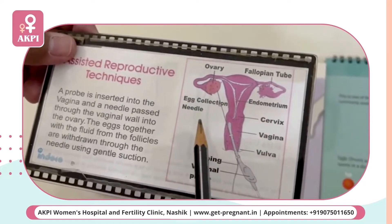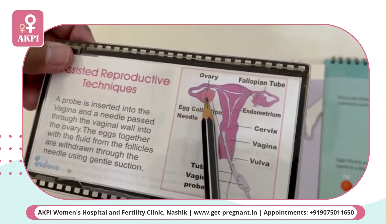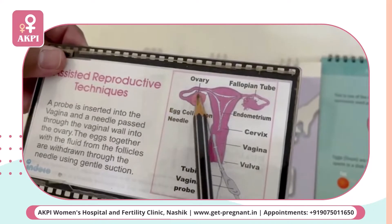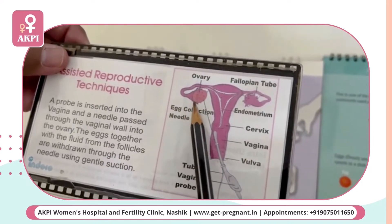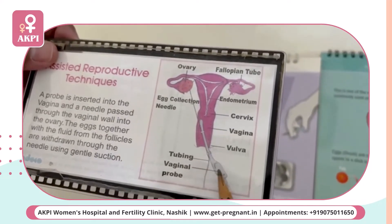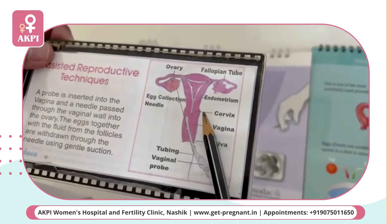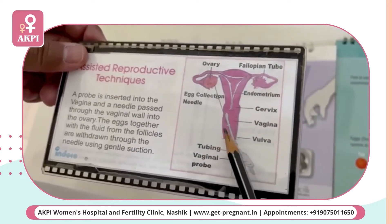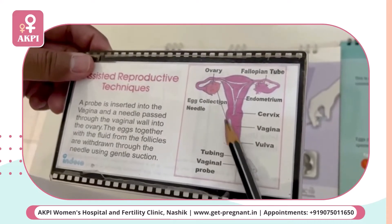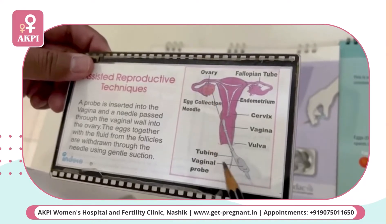In vitro fertilization is where the eggs are retrieved from the ovaries. These ovaries are then seen with the help of a transvaginal sonogram. This probe is inserted and the ovaries are visualized. A needle is injected along with the probe into the ovaries and the eggs are collected.